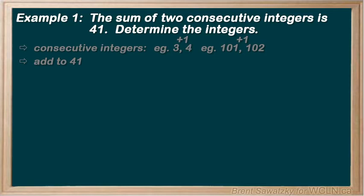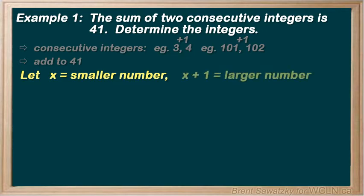If we say that the variable is x, and that x equals the smaller number, then our larger number should be one bigger. So, x plus 1 could be our larger number. Documenting it like this will help us set up the problem, and will definitely help us sort it out in the end.